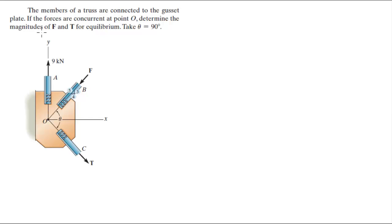If the forces are concurrent at point O, determine the magnitudes of F and T for equilibrium. F right here and T is right here. So basically they're telling us that this angle is 90 degrees. Take theta equal to 90 degrees.